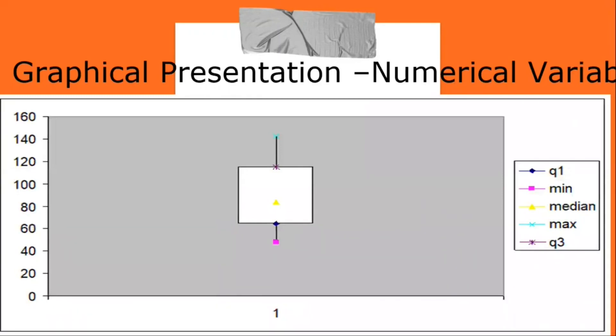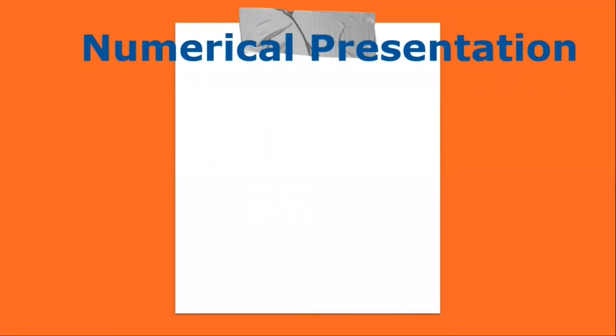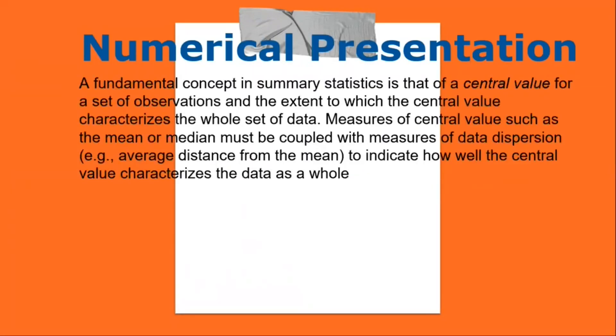A box plot describes the five-number summary. In numerical presentation, a fundamental concept in summary statistics is that of a central value for a set of observations and the extent to which it characterizes the whole data set. Measures of central value such as the mean or median must be coupled with measures of data dispersion — e.g., average distance from the mean — to indicate how well the central value characterizes the data as a whole.